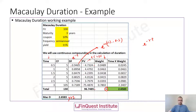For a coupon-paying bond, Macaulay duration will be lower than the overall maturity, because we receive intermediate cash flows from periodic coupon payments. Whereas for a zero coupon bond, there are no intermediate cash flows — just one single payment at maturity — so for a ZCB, the Macaulay duration will be exactly equal to the maturity of the bond.